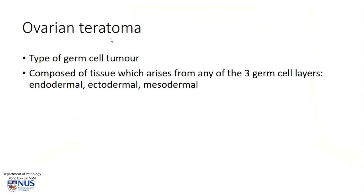So what is a teratoma? A teratoma is a type of germ cell tumor which is composed of tissue arising from any of the three germ cell layers: endodermal (for example, gut tissue), ectodermal (for example, skin), and mesodermal (for example, cartilage or bone). It can be composed of tissues primarily from one of these layers or from all three.